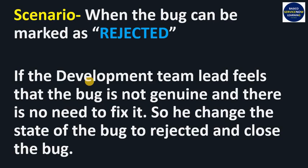The next scenario is when a bug can be marked as Rejected. If the development team lead feels the bug is not genuine and there is no need to fix it, they change the state of the bug to Rejected and close the bug.